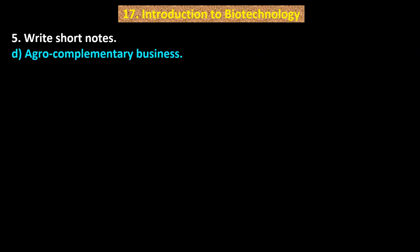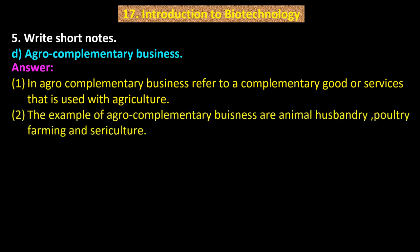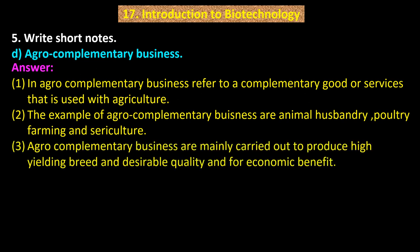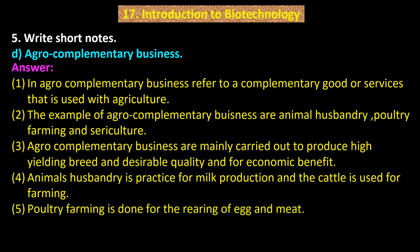D. Agro complementary business refers to complementary goods or services that are used with agriculture. Examples of agro complementary business are animal husbandry, poultry farming and sericulture. These are mainly carried out to produce high yielding breeds of desirable quality and for economic benefit. Animal husbandry is practiced for milk production and cattle is used for farming. Poultry farming is done for the rearing of eggs and meat. Sericulture is done for the rearing of silk.